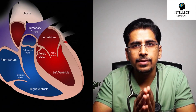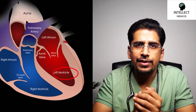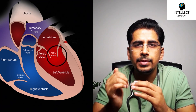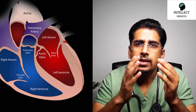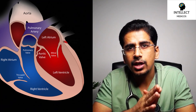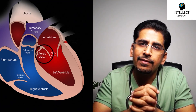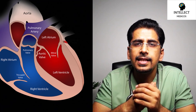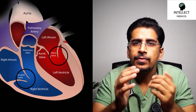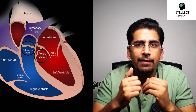Before diving into the heart sounds, I'll discuss briefly about the anatomy and physiology. As you all know, our heart has four chambers: right atria, right ventricle, left atria, and left ventricle. Between the right atria and right ventricle there is the tricuspid valve, whereas on the left side there is the mitral valve between left atria and left ventricle. Between the right ventricle and pulmonary artery there is the pulmonary (pulmonic) valve, and between the left ventricle and aorta we have the aortic valve. All four valves prevent backflow of blood.